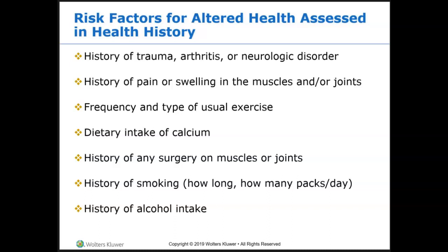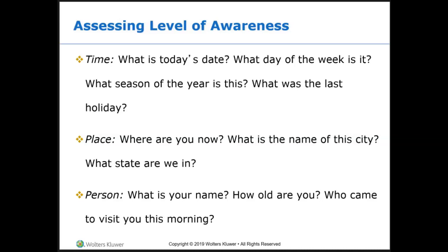Health history screening tests can identify health problems and diseases early when they are much easier to treat — the earlier we diagnose problems, the better off the patient is. Assessment of cognition: if a patient is able to answer all three questions correctly, refer to them as alert and oriented times three. If they answer two questions, they are alert and oriented times two. If they answer one, alert and oriented times one. If they cannot answer any of these questions but know their name and date of birth, they are alert and oriented to self only.